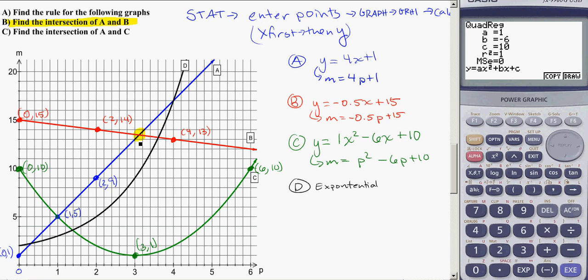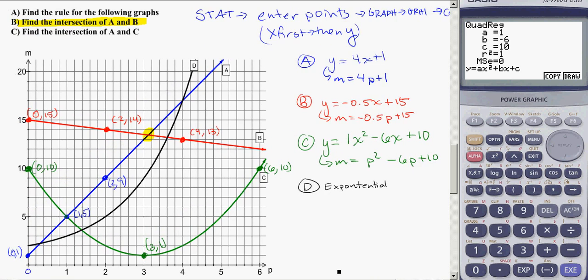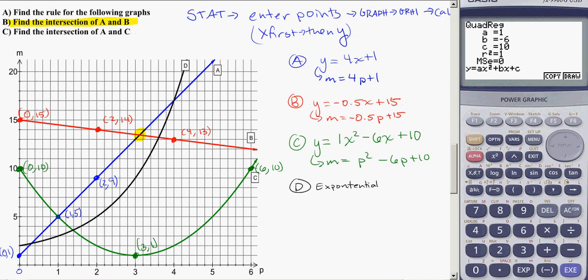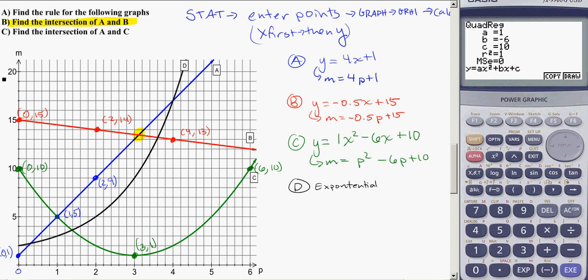So, if I'm going to find my intersections, I need to go... I'm trying to figure out how to write this. For your intersections, you need to go into Graph, Gsolve, and then it's the ISCT button.